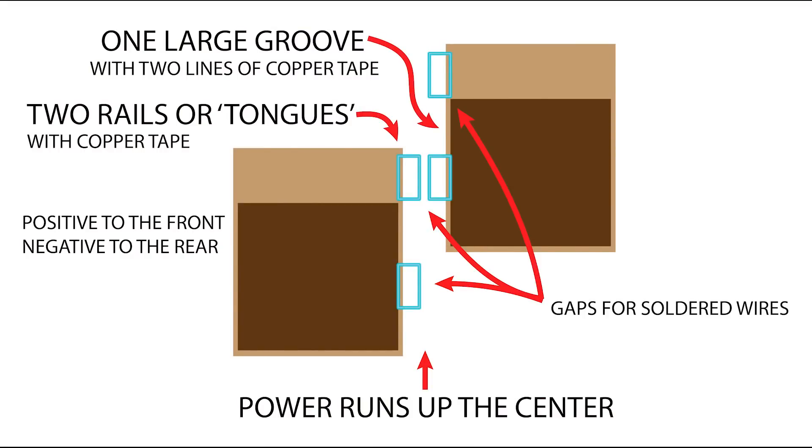The power is going to run up the center between the boxes. It's basically a tongue and groove design where there's two rails or tongues on the left-hand boxes and a large groove on the right-hand. Both of them have two runs of copper tape, positive to the front, negative to the rear.